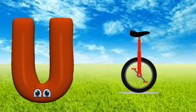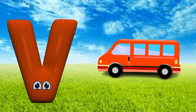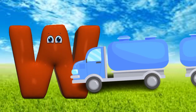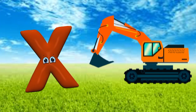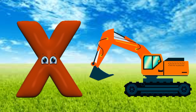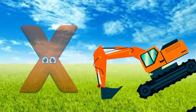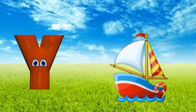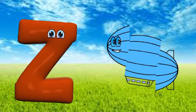U is for unicycle, unicycle. V is for van, V, v, van. W is for water tanker truck, W, w, water tanker truck. X is for excavator, excavator. Y is for yacht, Y, y, yacht. Z is for zeppelin, Z, z, zeppelin.